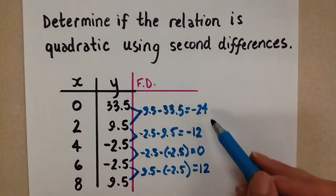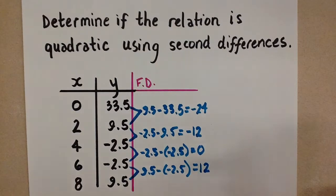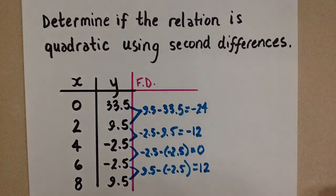So looking at all of the first differences, they are not equal. So if we were looking to see if this relation was linear, we would conclude right now that this is not a linear relation. So we know it's nonlinear. Now we want to go a step further and determine if this is quadratic.